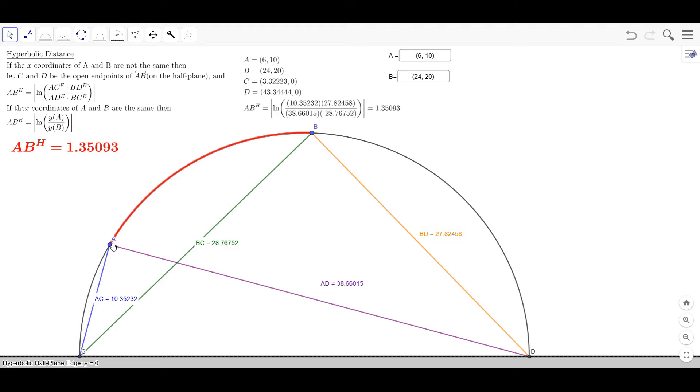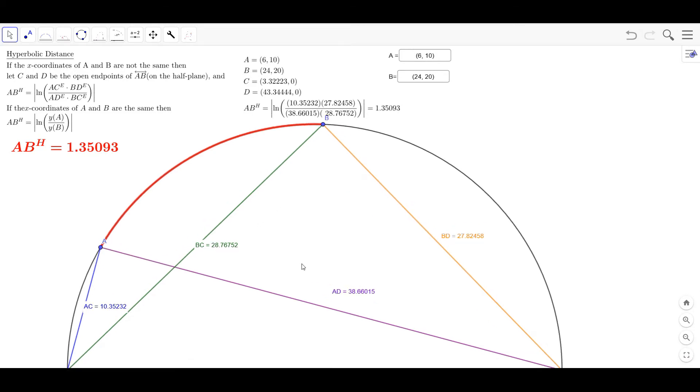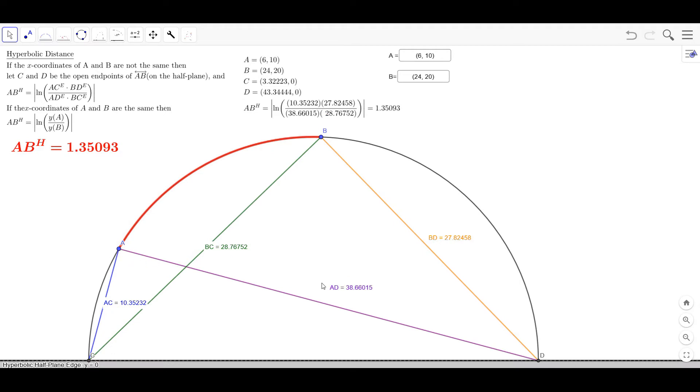Then what you do is you take the distance from A to D as a Euclidean distance, so here this is a Euclidean line segment that I've drawn in here and I found its distance using the Euclidean distance formula.